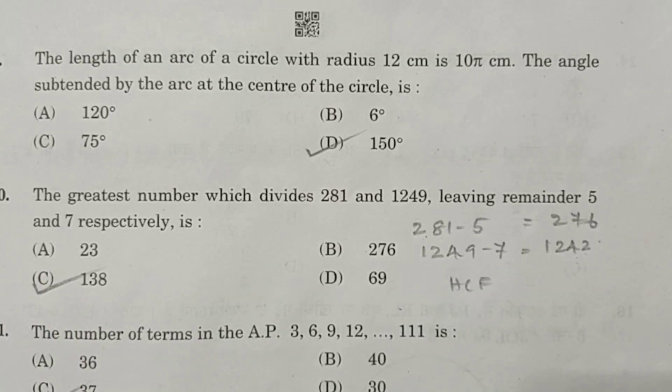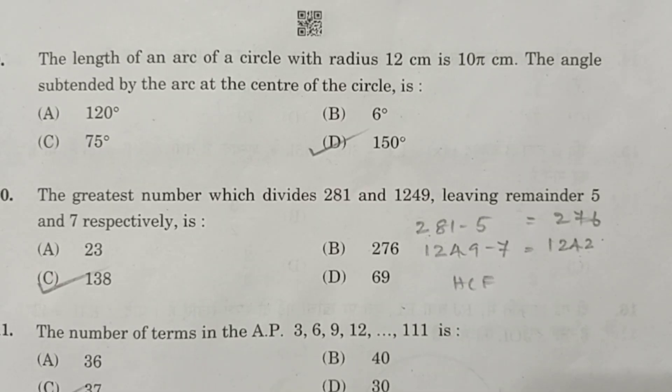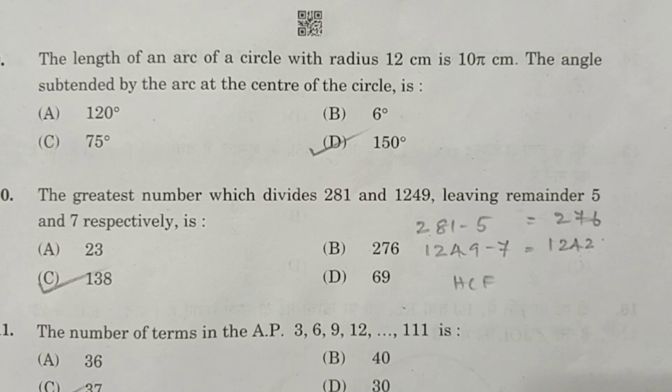Question 9. The length of the arc of a circle of radius 12 cm is 10 pi. The angle subtended by the arc at the center of the circle. The formula for finding the length of the arc is theta by 360 into 2 pi r. Given it is 10 pi, substituting each value, then we will get theta is equal to 150 degrees.